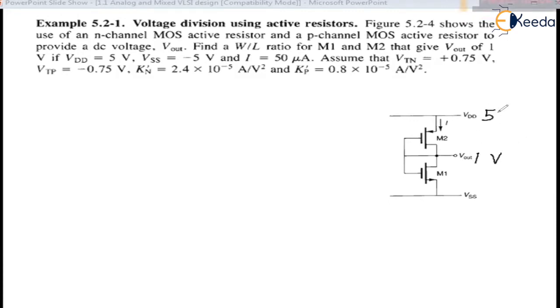V_DD is given 5 volts. Let me write it down. V_SS is given minus 5 volts. Current I is given 50 microampere. Threshold voltage V_tn is 0.75.